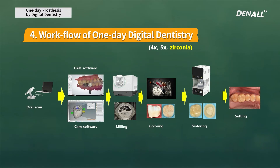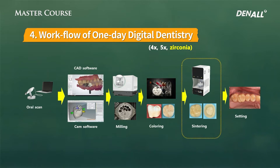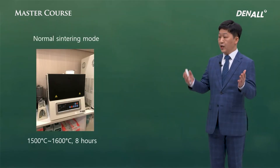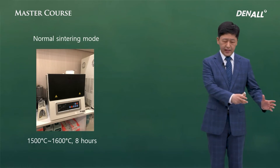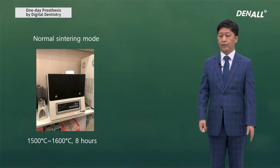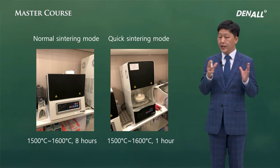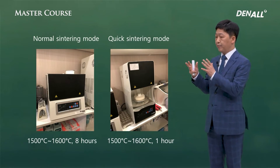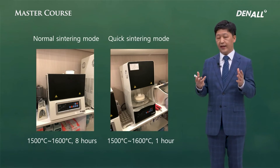Next, I'll talk about one-day practice using zirconia. After milling, before sintering, coloring is necessary. In general, you have to do 7–8 hours of sintering, which makes it difficult to provide a one-day prosthesis. Therefore, the alternative is quick sintering mode — a 1-hour process that replaces the 8-hour sintering process. If you are tight on time and need to complete a case rapidly, you can use this as a very effective protocol.